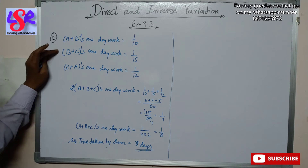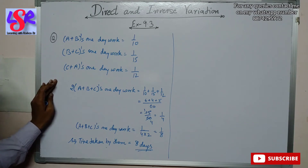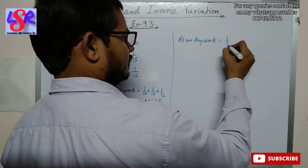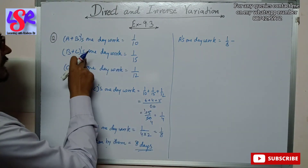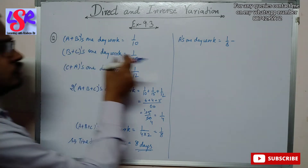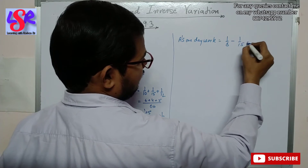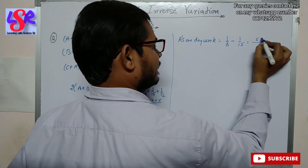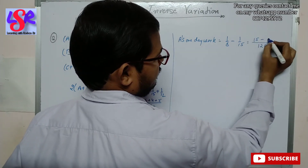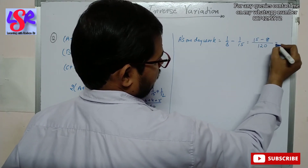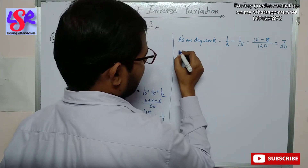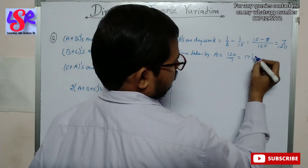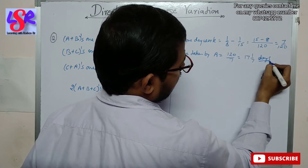Now we find A, B and C's individual one day work. A's one day work equals the combined one day work minus B plus C's one day work, that is 1 upon 8 minus 1 upon 15. Taking LCM of 8 and 15 as 120, we get 15 minus 8 = 7 upon 120. So time taken by A equals 120 upon 7, that is 17 and 1 upon 7 days to complete the whole work.